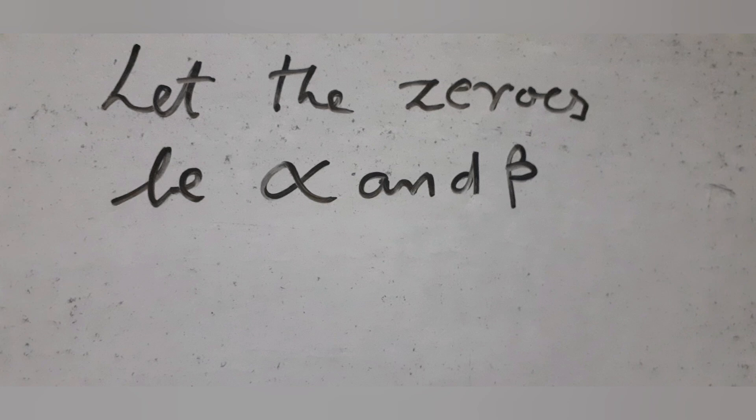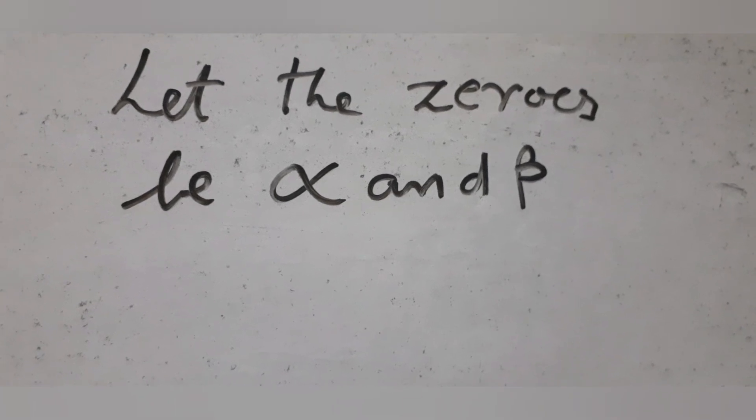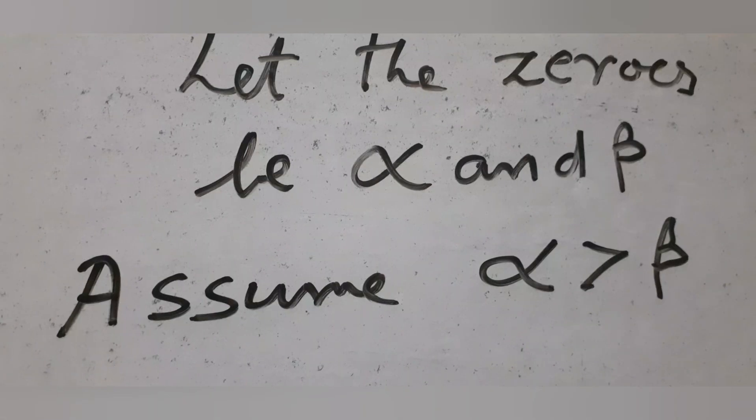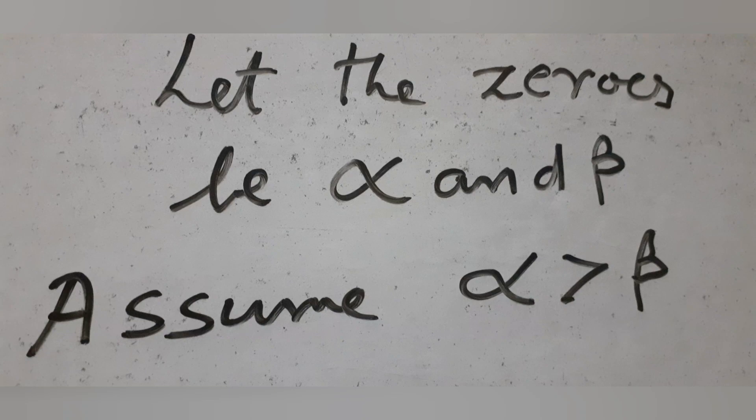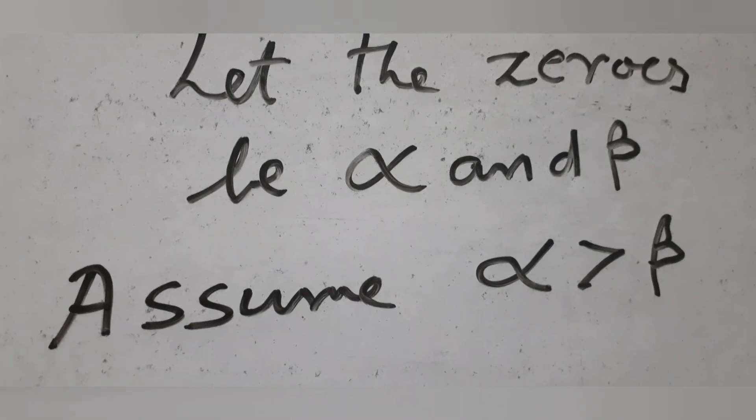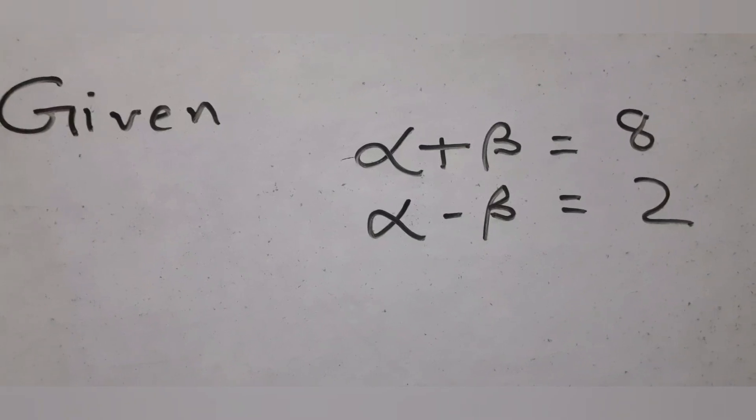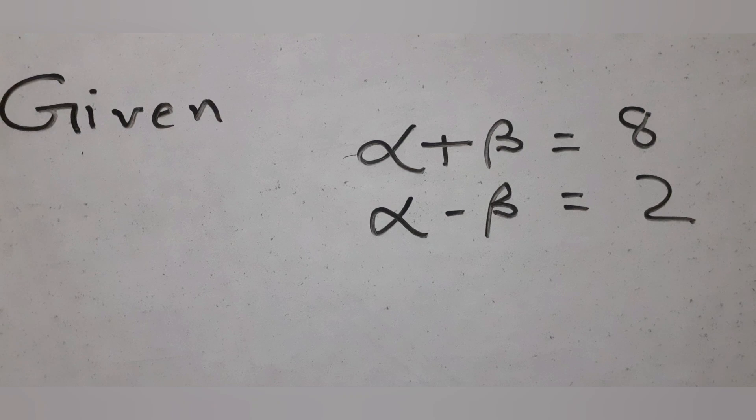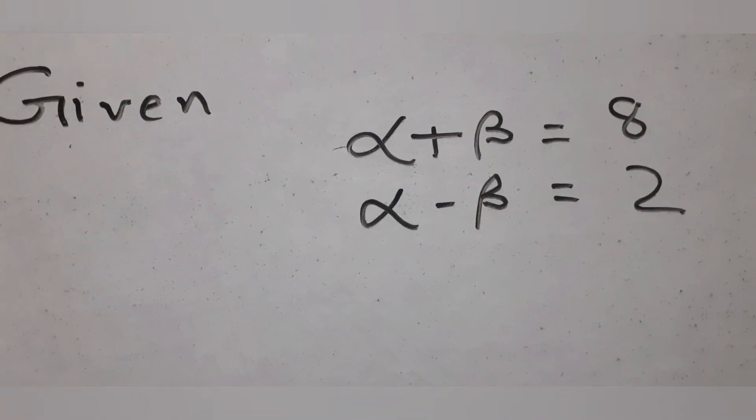Assume that the zeros are alpha and beta. Also assume that alpha is the bigger number, so alpha is greater than beta. Given the sum of the zeros is 8, we can write alpha plus beta equal to 8. The difference of the zeros is 2, so alpha minus beta equal to 2.